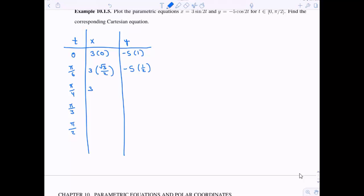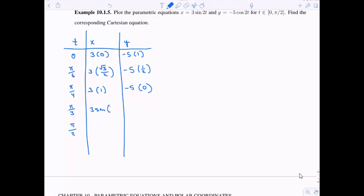How about pi over 4? So 3 times sine of 2 times pi over 4, aka pi over 2. Sine of pi over 2 is 1. Then negative 5 times cosine of pi over 2. Cosine of pi over 2 is 0. And then pi over 3, this is 3 times sine of 2pi over 3. Sine of 2pi over 3 is still root 3 over 2. When I plug in pi over 3 into y, this is cosine of 2pi over 3. Cosine of 2pi over 3 is negative 1 half.